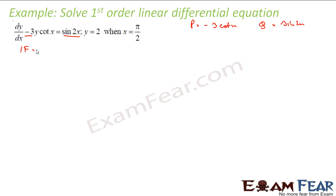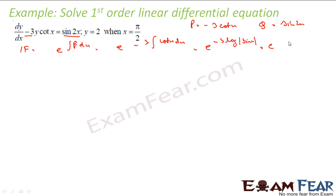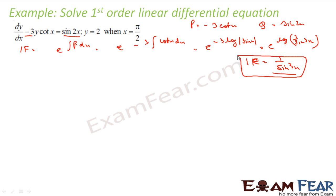The integrating factor is e to the power of the integral of p dx, that is e to the power of the integral of minus 3·cot(x) dx, which equals e^(−3·log(sin x)), that is e^(log(1/sin³x)), which becomes 1/sin³x. Note that minus 3·log(sin x) becomes log(1/sin³x) because the coefficient was minus 3, making it sin cubed in the denominator.